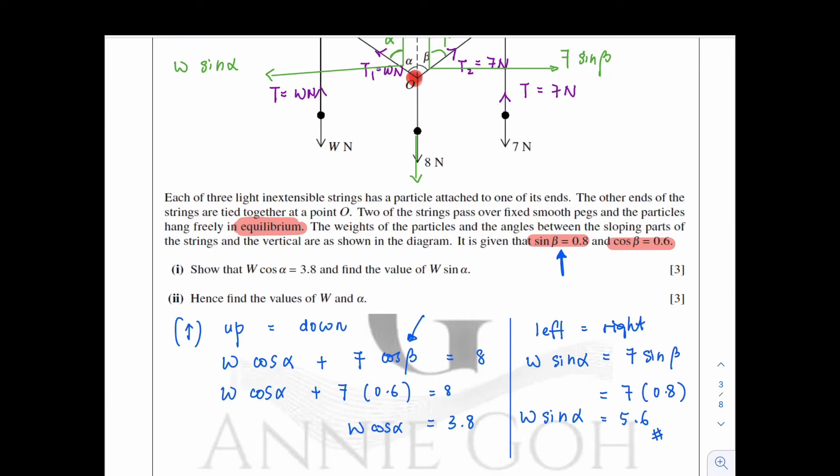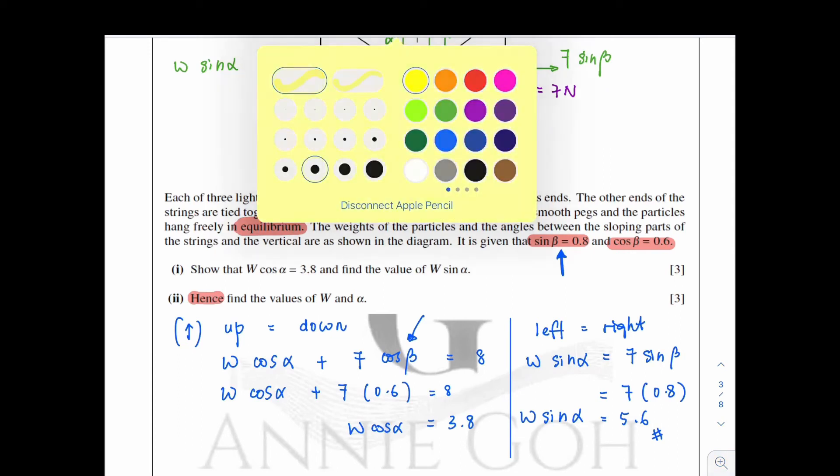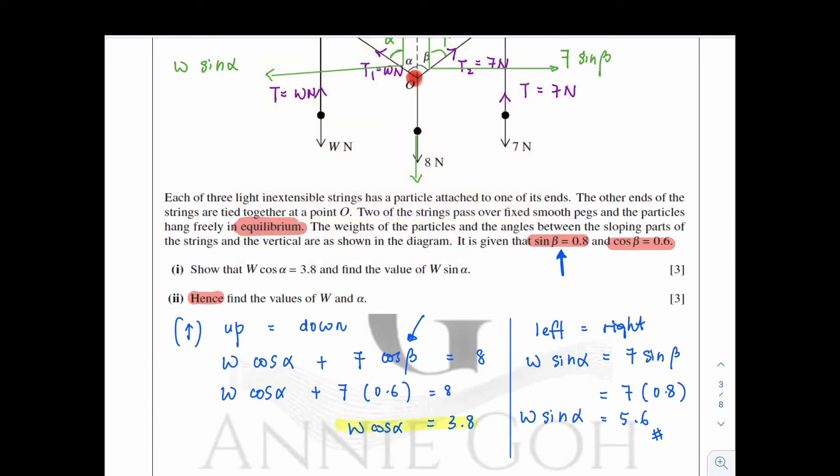For part 2, have a look at the question. Hence means related to part 1. Find the values of w and alpha. So from part 1, what we have here: w cos alpha equals to 3.8, and w sin alpha equals to 5.6. We will just need to solve simultaneously to get the w and alpha.